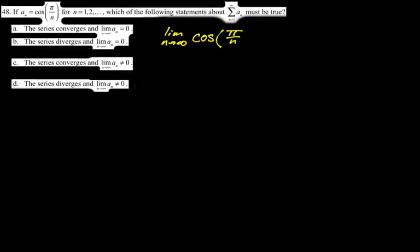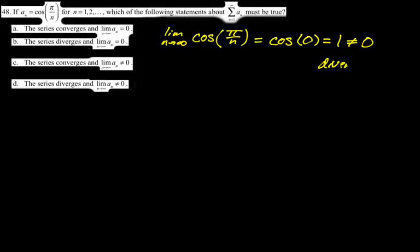Question 48 of 71: if a_n = cos(π/n) for n ≥ 1, which of the following statements about the sum from 1 to infinity of a_n must be true? Taking the limit as n→∞ of cos(π/n): since π/n → 0, cos(0) = 1, which is not zero. So by the nth term test, this series diverges. The answer is D — the series diverges and the limit is not zero. A series can't converge with the nth term limit not being zero.